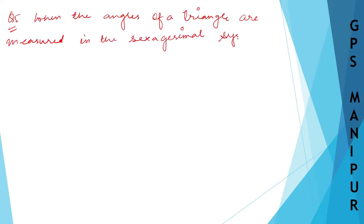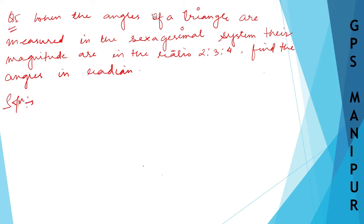Now we are doing Exercise 13.1, question number 5. The question says: when the angles of a triangle are measured in the sexagesimal system, their magnitudes are in the ratio 2:3:4, find the angles in radians.